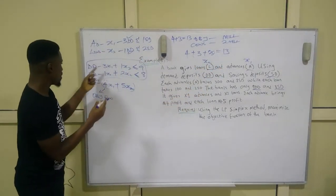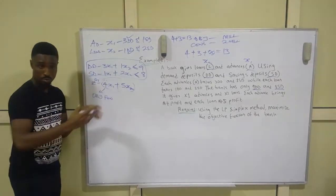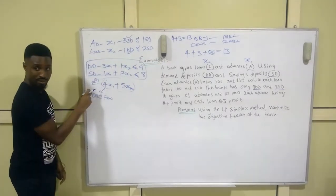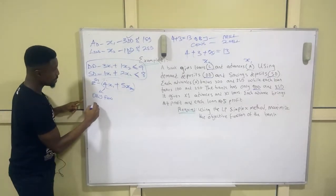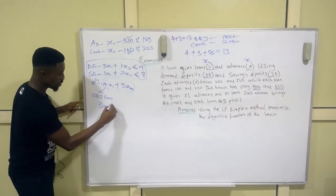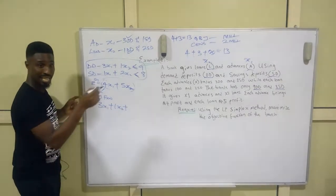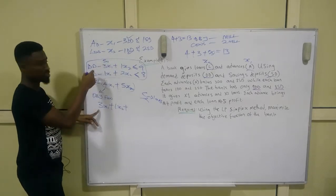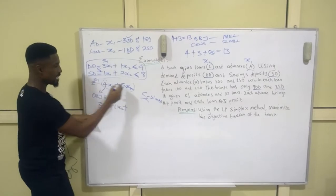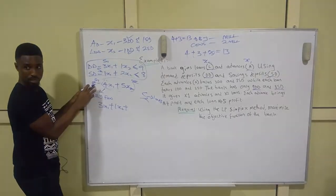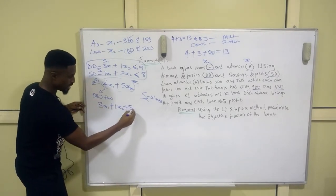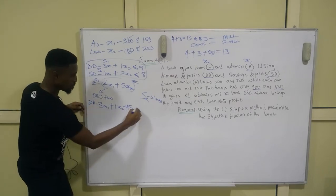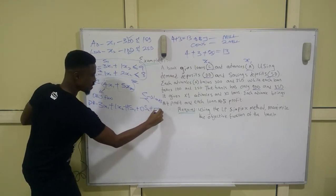We know there are three variables — x1, x2, and the objective — so we spread the constraints and add slacks. For the DD constraint: 3x1 + 1x2 + s1. Slacks are represented as s: s1 represents the DD constraint, s2 represents the SD constraint, and z represents the objective function.